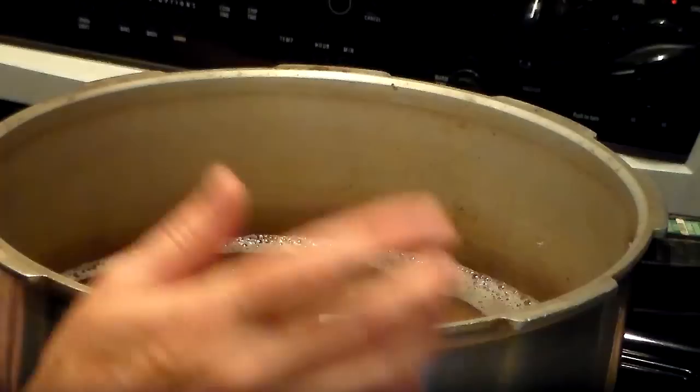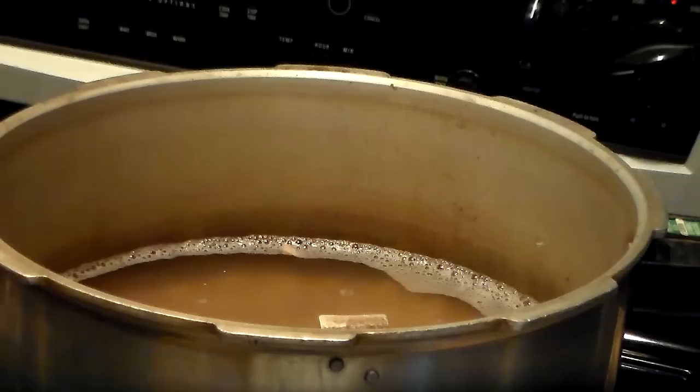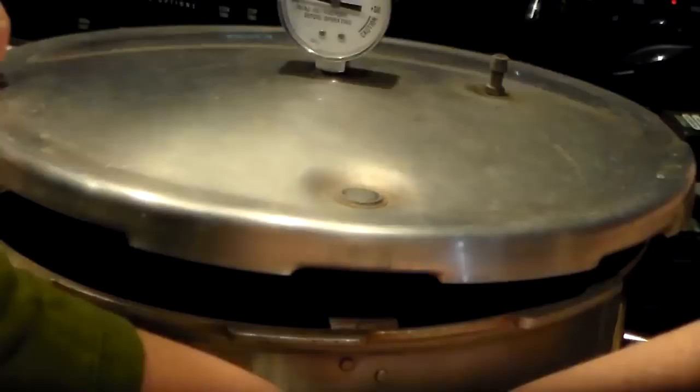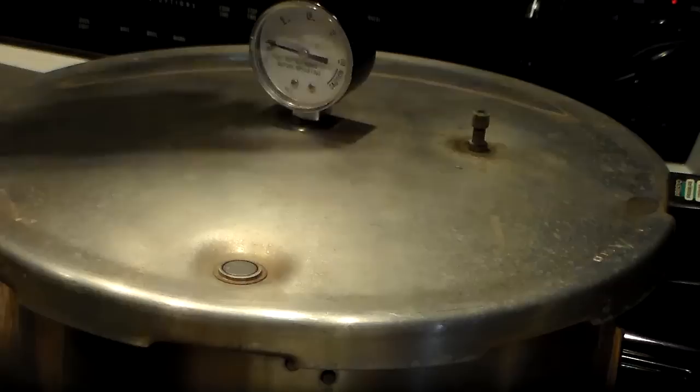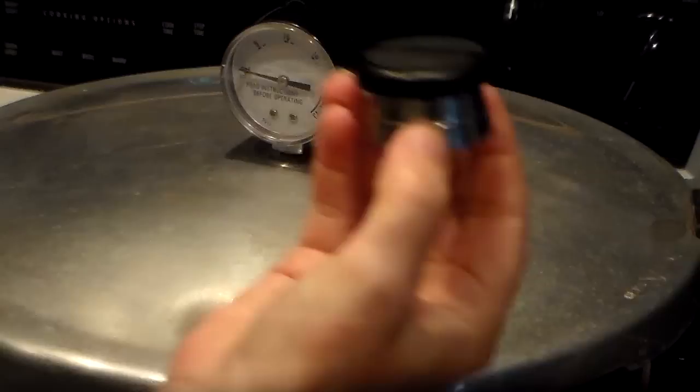These beans have soaked overnight in the refrigerator, they've been rinsed, and are now in my pressure cooker. I poured enough water into the pressure cooker to cover the beans with about four to five inches of water. Put your lid on, lock it, and set the burner to medium-high temperature. What we're watching for now is for steam to start coming out of the steam vent.